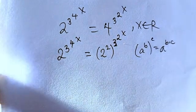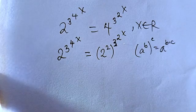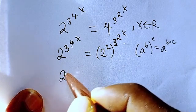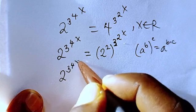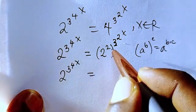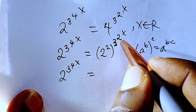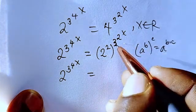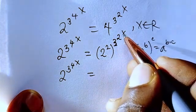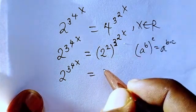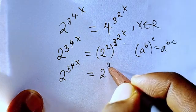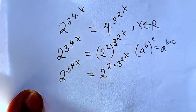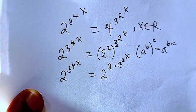Using that law, the left side stays as 2 to the power of 3 to the power of 4 to the power of x. On the right, 2 and 3 to the power of 2 to the power of x will multiply together — the 2 acts as b, while 3 to the power of 2 to the power of x acts as c — giving 2 times 3 to the power of 2 to the power of x.